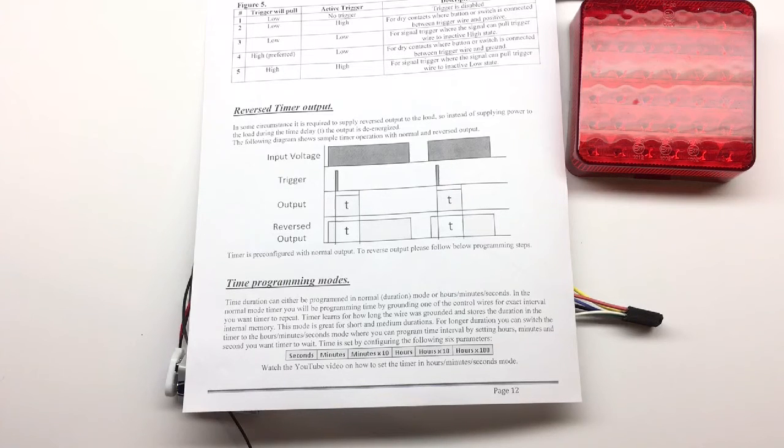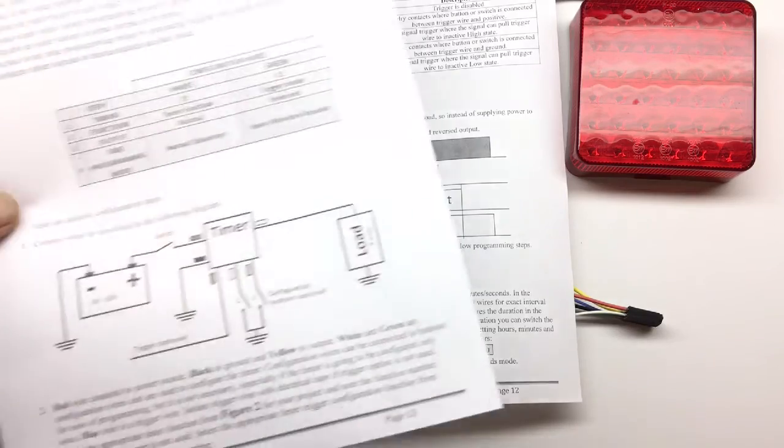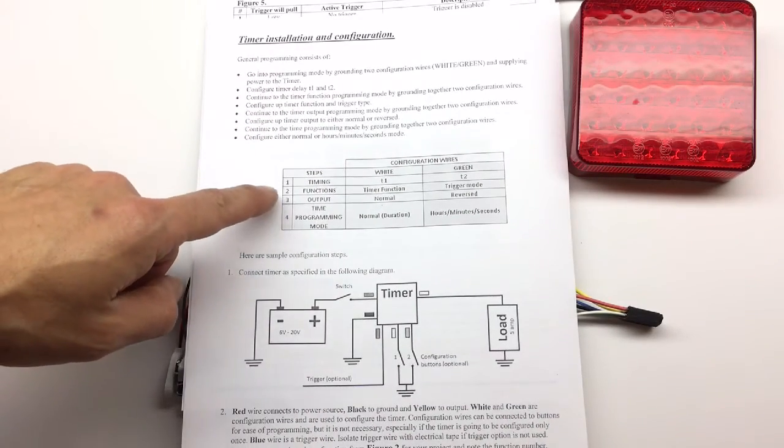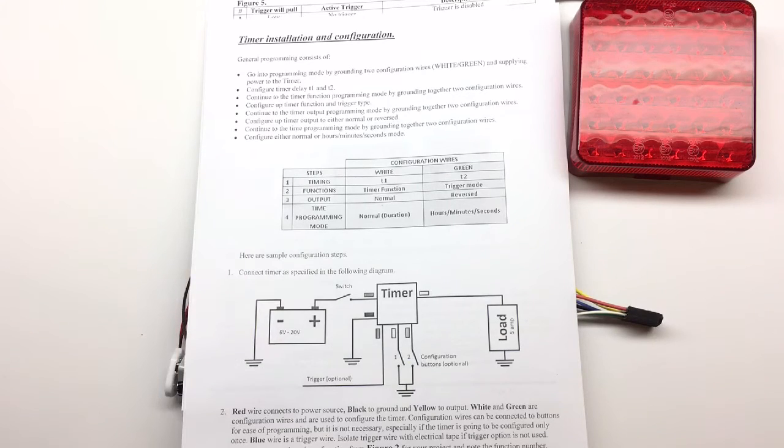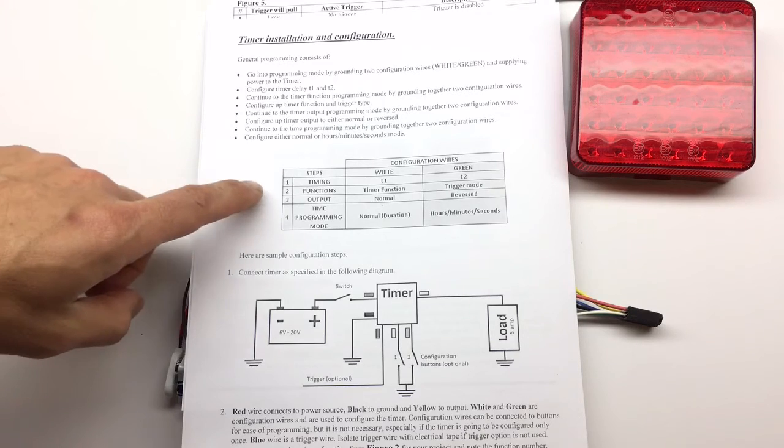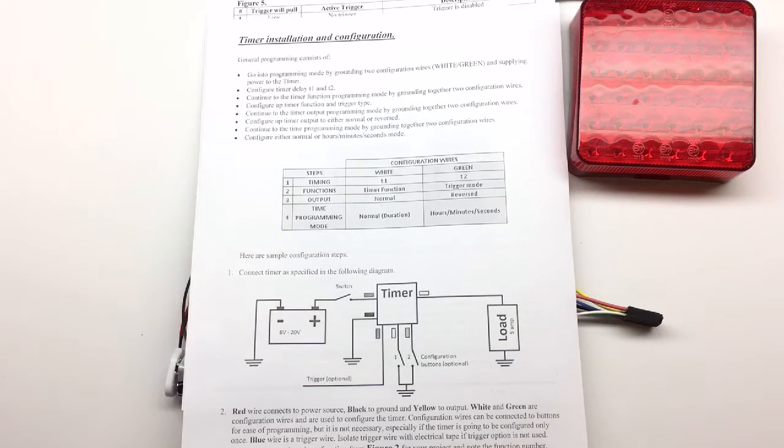To use that mode, we added another menu. In a normal process, you would go through three steps: you would set up your timing first, then set up your function and trigger function, and then the third parameter is the output. You can either set it up to be normal or reversed. Now we added the fourth parameter, where you can set up your programming mode, either normal or hours, minutes, seconds.